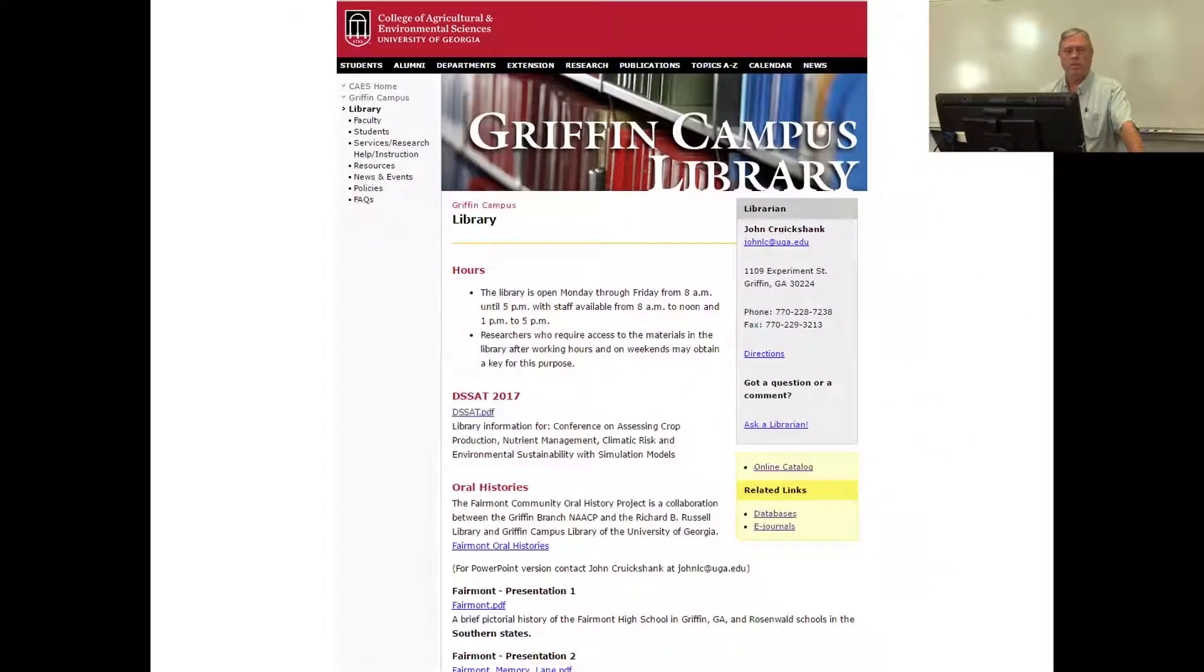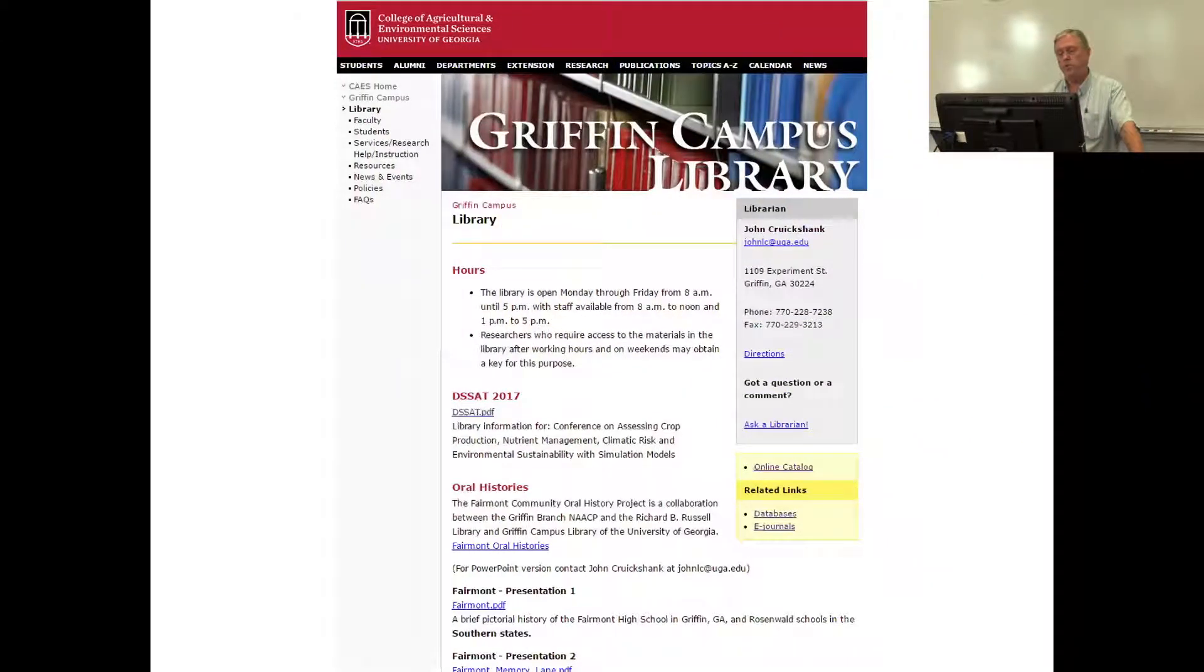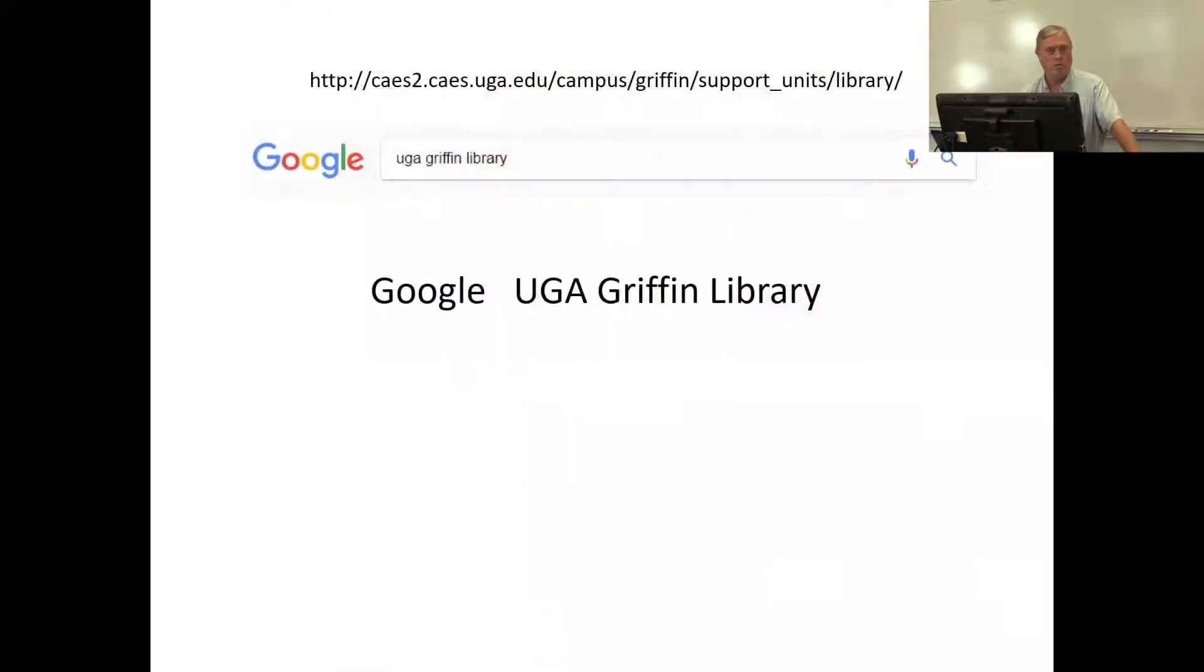I'm going to begin with our webpage. Here you can find my contact information, name, email address, phone number. The easiest way to get to our webpage is simply go to Google and type in UGA Griffin Library. Those three words in any order and just click on the first link that comes up and that'll take you to our webpage.